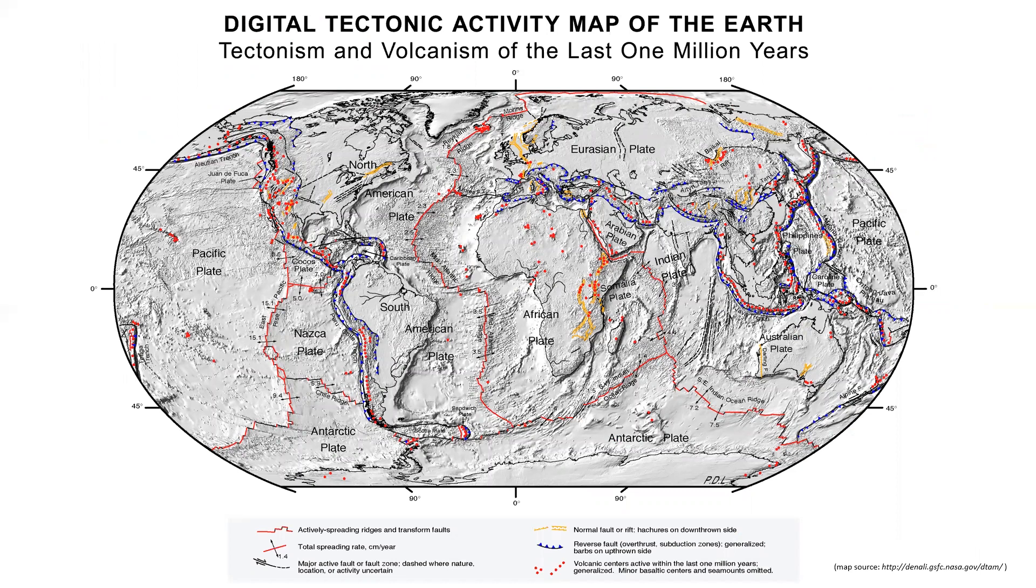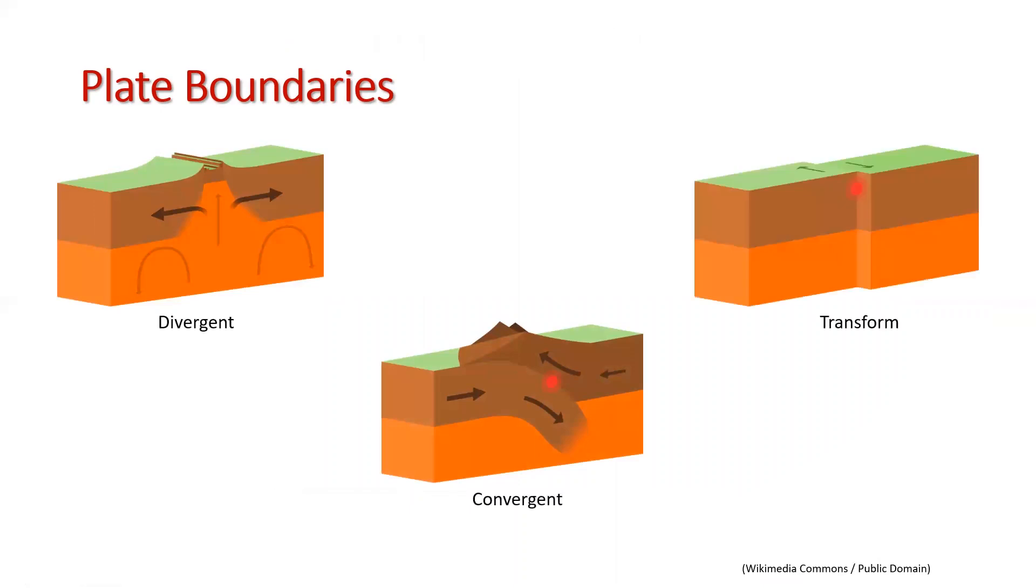Here is a global map of plate tectonic configuration of our planet. In the next few slides, we will discuss different types of plate boundaries shown in this map. There are three types of plate tectonic boundaries: divergent, convergent, and transform.